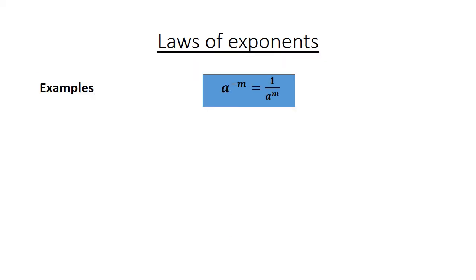Laws of exponents — now we look at the negative exponent. a to the power of negative m equals 1 over a to the power of m. 3 to the power of negative 1 equals 1 over 3. 4x to the power of negative 3 equals 4 over x to the power of 3.